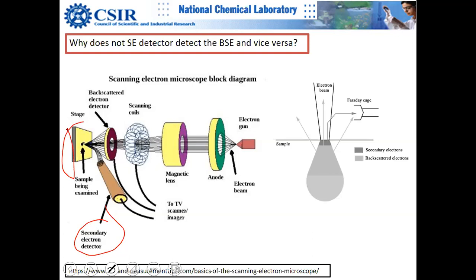Backscattered electrons are elastically scattered electrons, so they have angular information and their flux is detected by the dedicated backscattered detector.